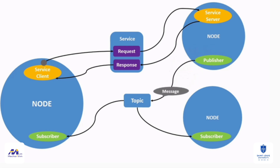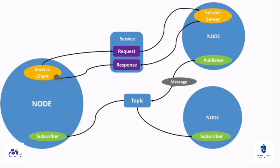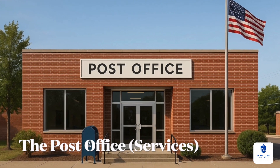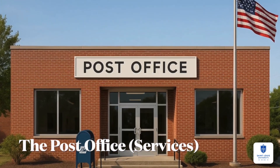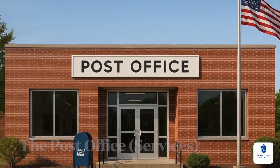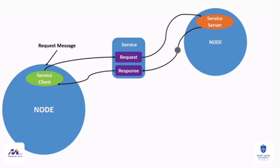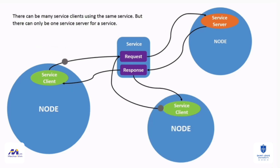This publish-subscribe model is inherently decoupled. Publishers need not know their subscribers, ensuring scalability and flexibility in system design. Certain interactions require direct exchange. Imagine a post office: you send a letter and expect a reply. In ROS 2, this is the role of services — they implement synchronous request-response communication. For instance, a localization node may query a map server: 'What is my pose in this coordinate frame?' The service responds with an answer. Services provide precision where dialogue rather than broadcast is required.